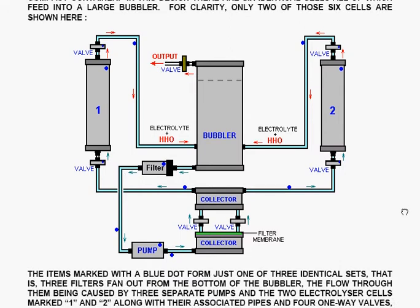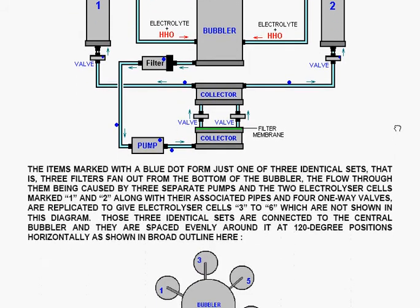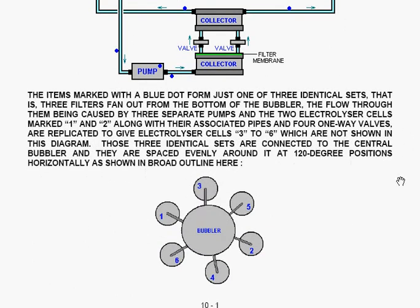The items marked with blue dots form just one of three identical sets. That is three filters fan out from the bottom of the bubbler, the flow through them being caused by three separate pumps and two electrolyzer cells.